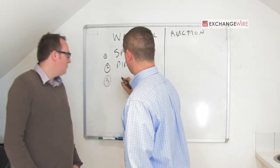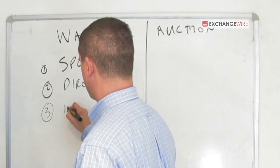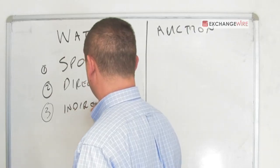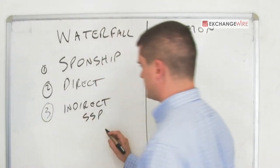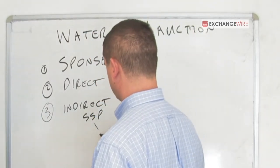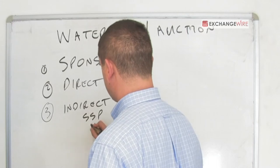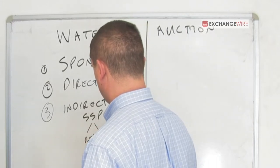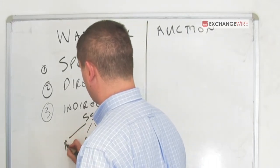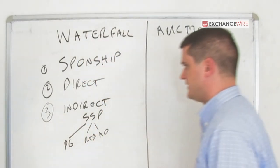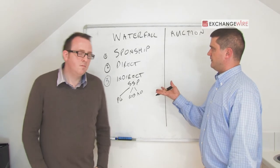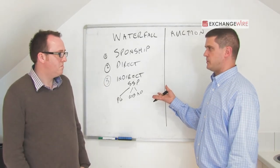And then you get into kind of indirect, which is your networks. An SSP essentially soliciting to ad nets, RTB, this emerging programmatic guaranteed and private marketplaces, et cetera. So, what's the problem here?